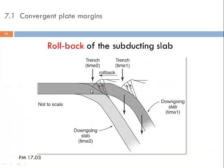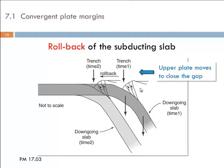Here we see again the rollback of a subducting slab. At time one the down-going slab is in one position, and the trench is also at that same time in that position. With progressing rollback the trench moves further seaward. The overriding continental crust, lithosphere, and accretionary prism will close that gap and move seaward into a new position. Of course, the upper plate has to move in the same direction in order to close the gap between the upper plate and the rolling-back down-going lithosphere.